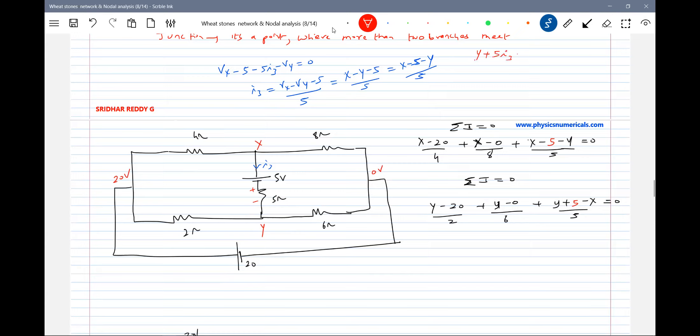Y plus 5*I3 plus 5 minus X equal to zero. Therefore, Y minus X should be equal to... I3 is needed, so I3 is equal to...